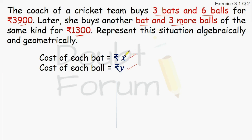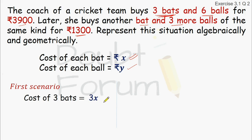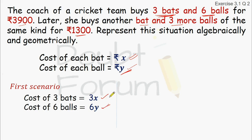Next, we will take the first scenario. The coach is buying 3 bats, so the cost of 3 bats will be 3X, because the cost of each bat is X. Similarly, 6 balls — the price for 6 balls will be 6Y. Since the coach pays Rs. 3900 to buy 3 bats and 6 balls, we get: 3X + 6Y = 3900. This is our equation number 1.